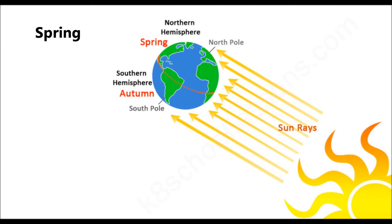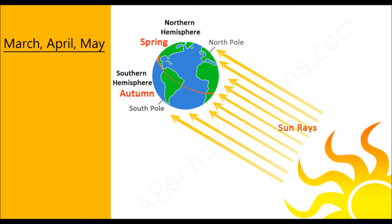Spring is the first of the four seasons. In March, April, and May, the equator is tilted to receive the most sunlight. The Northern Hemisphere enjoys spring during this time, while the Southern Hemisphere goes through autumn.